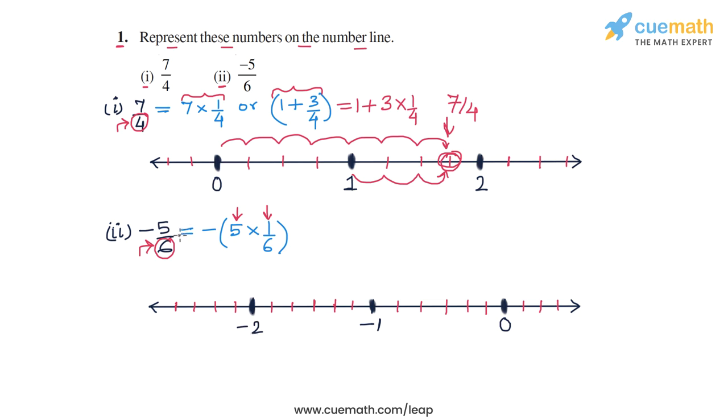Now to plot minus 5 by 6, we start from 0, and we make 5 jumps to the left, 5 jumps of length 1 by 6. So starting from 0, we go 1, 2, 3, 4, and 5. So this number here represents minus 5 by 6.